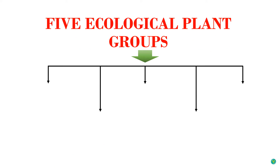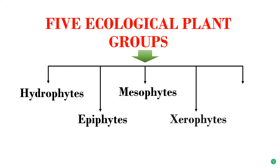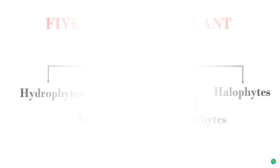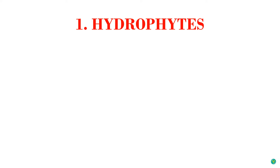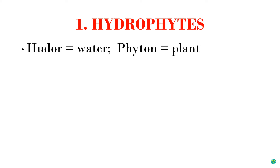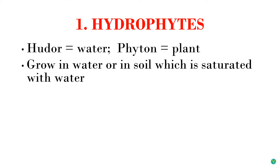Now let's see the major classifications. Basically there are five ecological plant groups: hydrophytes, epiphytes, mesophytes, xerophytes, and halophytes. Let's see hydrophytes first. This word is derived from Greek — 'hudor' meaning water, and 'phyton' meaning plant. Hydrophytes are plants which are adapted to grow in or nearby water bodies; they may be partly or wholly submerged in water.